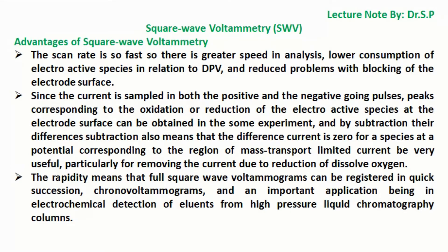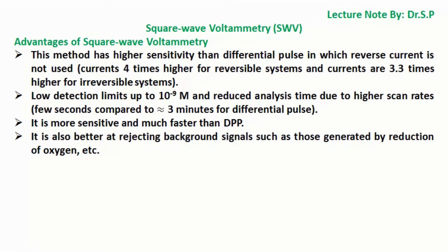The rapidity means that full square wave voltammograms can be registered in quick succession as chronovoltammograms, with an important application being in electrochemical detection of eluents from high-pressure liquid chromatography columns. This method has higher sensitivity than differential pulse voltammetry, in which the reverse current is not used — currents are typically four times higher for reversible systems and 3.3 times higher for irreversible systems. Low detection limits of up to 10^-9 molar are achievable, with reduced analysis time due to higher scan rates of a few seconds, compared to approximately 3 minutes for differential pulse voltammetry. It is more sensitive and much faster than DPP, and it is also better at rejecting background signals such as those generated by reduction of oxygen.